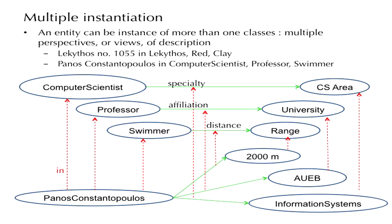Panos Constantopoulos can be classified as a computer scientist, as a professor, or as a swimmer. As a computer scientist he may be described by his specialty, whose range is an area of computer science. As a professor, the descriptive property might be affiliation — that is, the university. As a swimmer, the descriptive property might be the distance that the person swims. Taking the particular instance, we say it is an instance of all three classes.